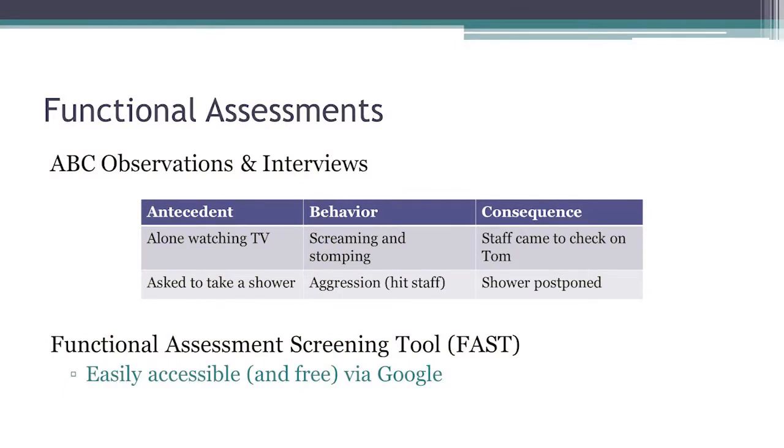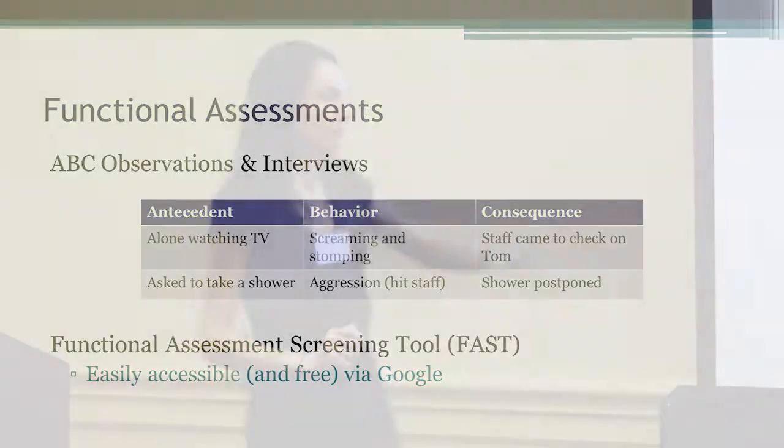Another example: staff ask the individual to take a shower, the individual engages in aggression, and then staff say, 'Looks like you need a break — maybe we'll shower after work or before bed.' What might be the function there? It might be escape. But it might also be attention — it might be that the staff coming and talking about the shower being postponed is the reinforcer in and of itself. The FAST is an indirect assessment you can find online, but it's even less valid than the ABC observation, though certainly better than nothing.